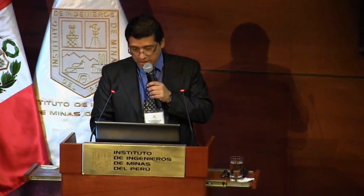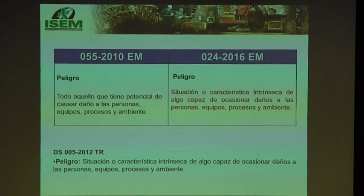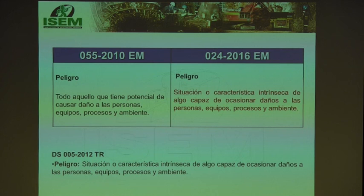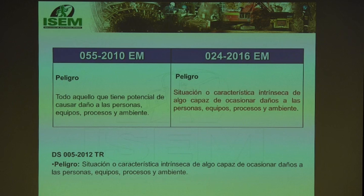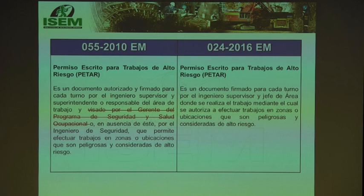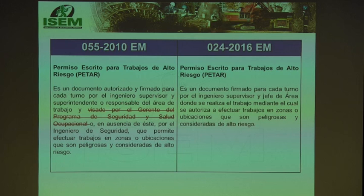The definition of 'peligro' (hazard) has been taken from the law and slightly modified — 'a situation or intrinsic characteristic of something capable of causing damage to persons, equipment, or processes' — very similar to OHSAS 18001. For 'riesgo' (risk), as Jerry noted, there has been a change: the PETAR signing requirement for managers has been removed, which is a positive change welcomed by safety managers. The new risk definition comes from the law's regulation and is simply: 'probability that a hazard materializes under certain conditions and causes damage to persons.'